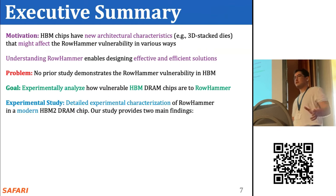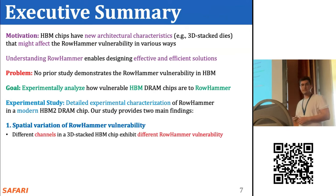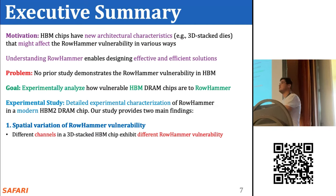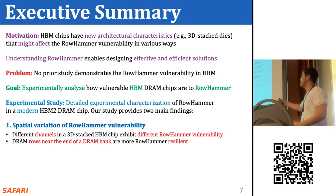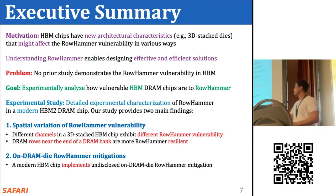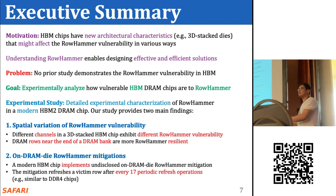We perform a detailed experimental characterization of rowhammer in a real modern HBM2 DRAM chip and provide two main findings. First, there is substantial variation in rowhammer vulnerability across different physical locations of the HBM2 chip — different channels in the 3D-stacked chip exhibit different vulnerability levels, and DRAM rows near the end of a bank are more rowhammer-resilient. Second, we find an undisclosed on-DRAM-die rowhammer mitigation mechanism resembling one found in real DDR4 chips.